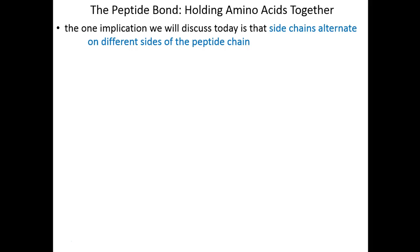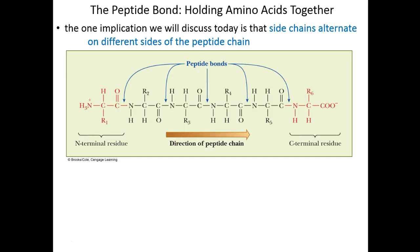One implication is that side chains alternate on different sides of the peptide chain. We'll use this as an example—a generic chain of amino acids. Here we have the first amino acid. We always start an amino acid chain with the amino group.